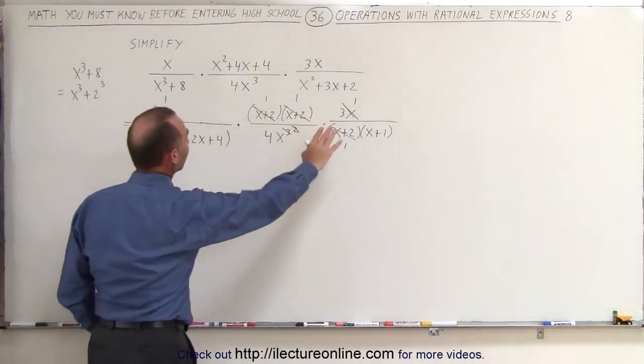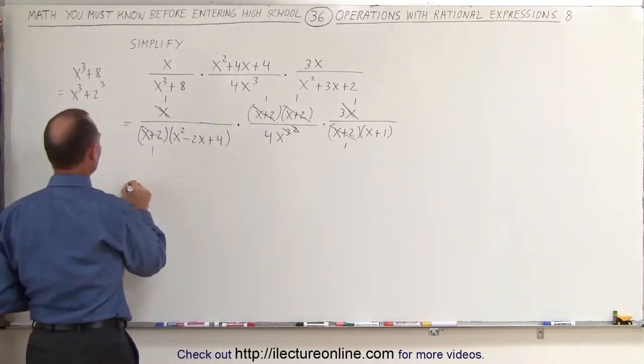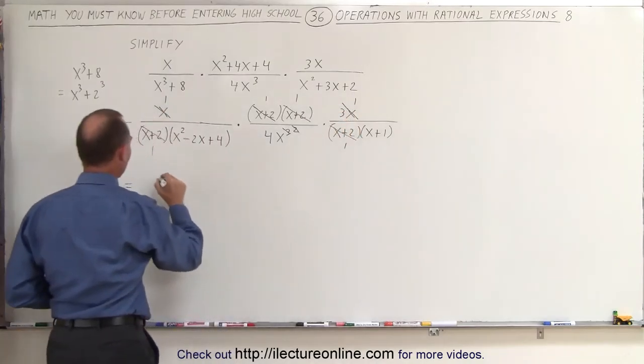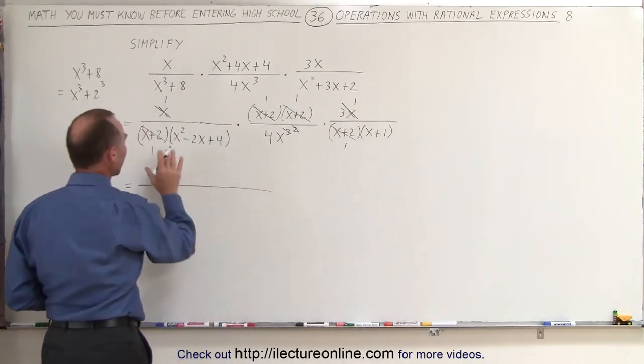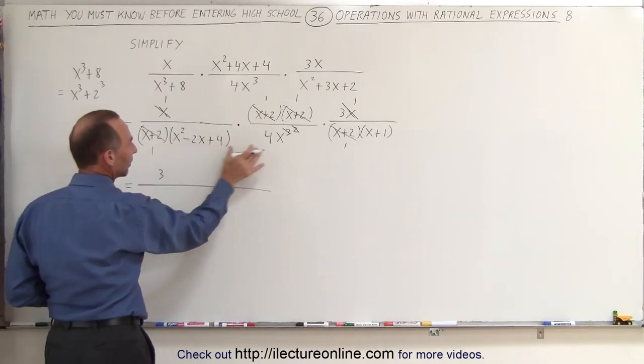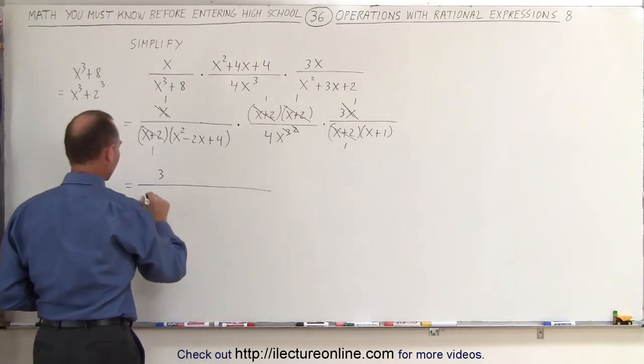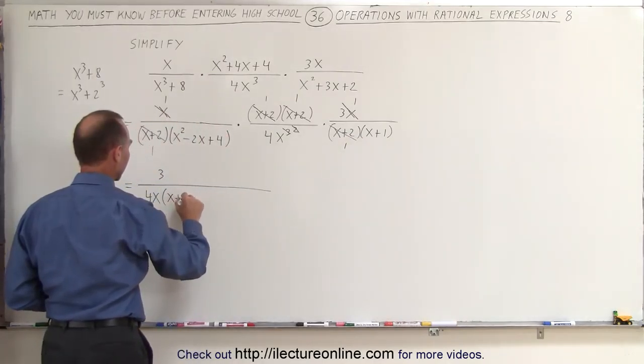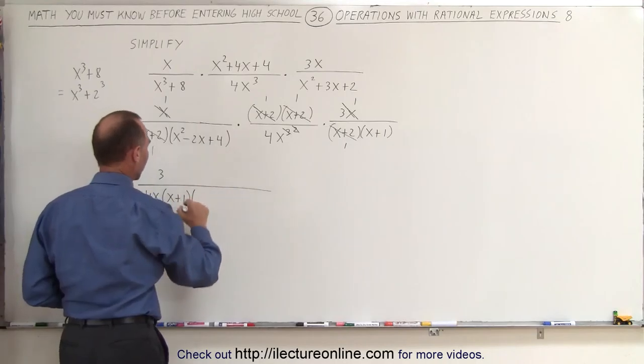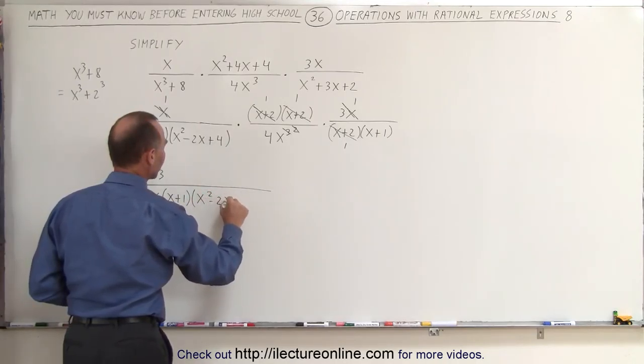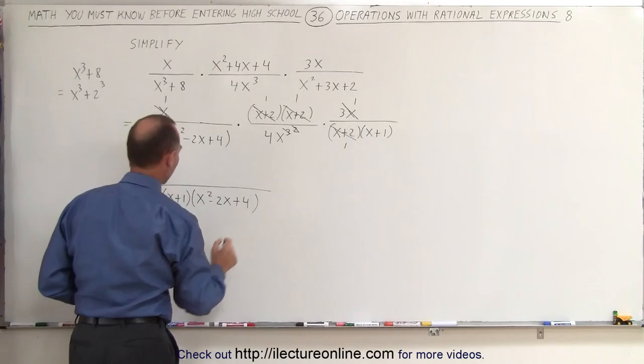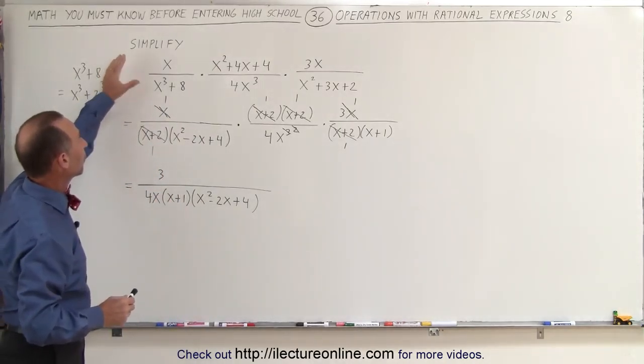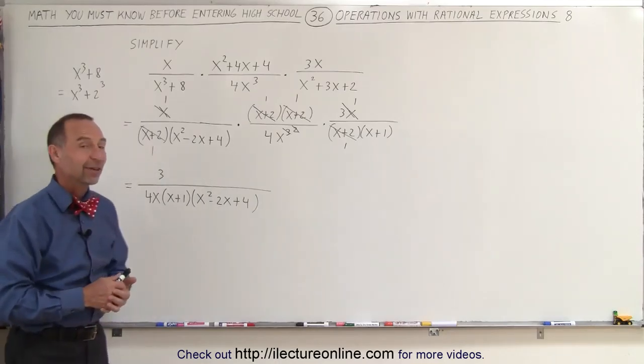Now we have to multiply everything together, see what we have left. So this is equal to 1 times 1 times, we still have the 3 over here, so we have a 3 in the numerator, divided by, now we have this in the denominator, we have this, and we have that. So we can write the 4x times the x plus 1 times this quantity right here, this trinomial, x squared minus 2x plus 4. And that's the simplest form we can write this, so that is the simplified form of our original expression. And that's how it's done.